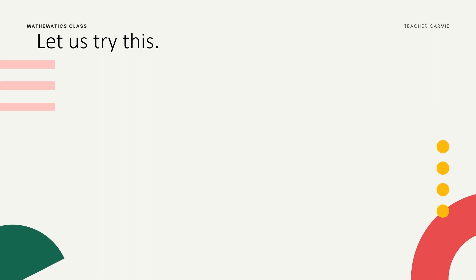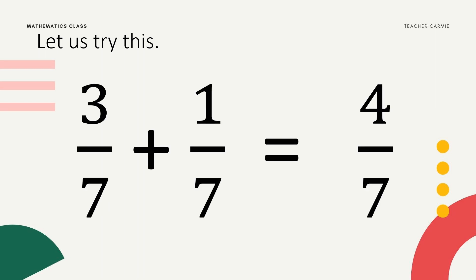Let us try the following example: 3/7 plus 1/7. As we can see, this is a similar fraction. Since it's a similar fraction, we don't need to change it. We just add the numerator — the number on top. So, 3 plus 1 equals 4. For similar fractions, we just copy the denominator 7. So, 3/7 plus 1/7 equals 4/7.